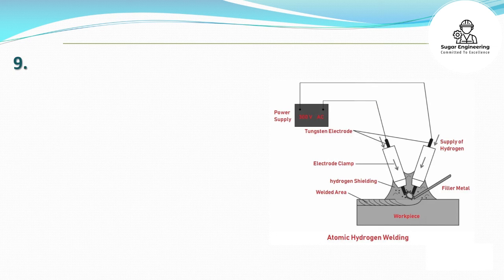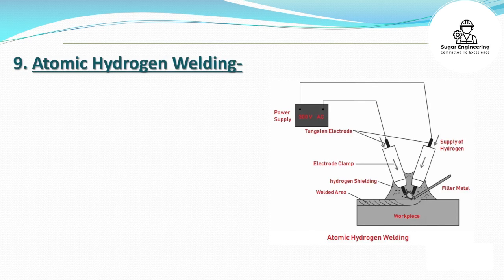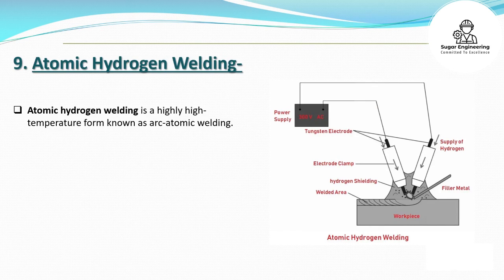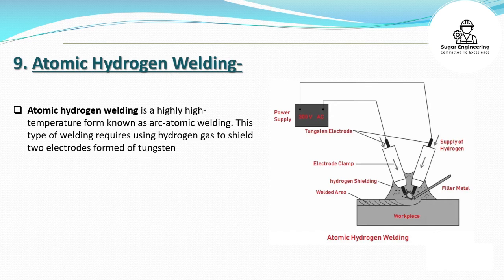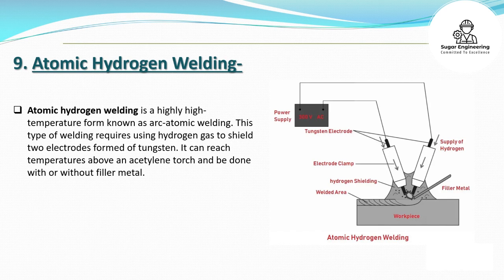9. Atomic Hydrogen Welding. Atomic hydrogen welding is a highly high-temperature form known as arc-atomic welding. This type of welding requires using hydrogen gas to shield two electrodes formed of tungsten. It can reach temperatures above an acetylene torch and can be done with or without filler metal.